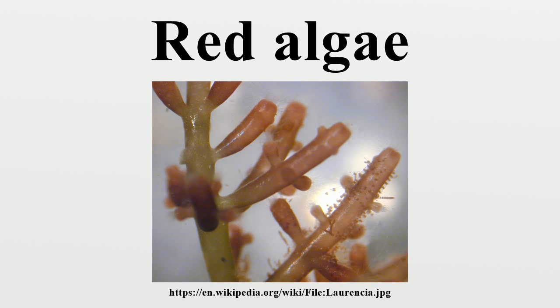Other references indicate as many as 10,000 species; more detailed counts indicate about 4,000 in about 600 genera. The red algae form a distinct group characterized by having eukaryotic cells without flagella and centrioles.